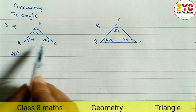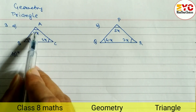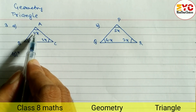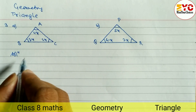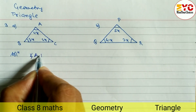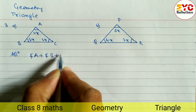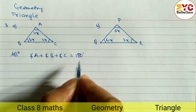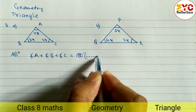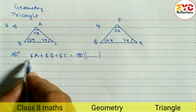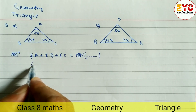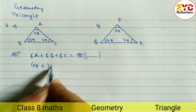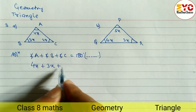ABC is a triangle and we know that the sum of angles of a triangle is equal to 180 degrees. So three angles are here: angle A, angle B, angle C. So angle A plus angle B plus angle C is equal to 180. What is the value of A? A means 4x, so angle A is equal to 4x. Angle B is equal to 3x, and angle C is equal to 2x.